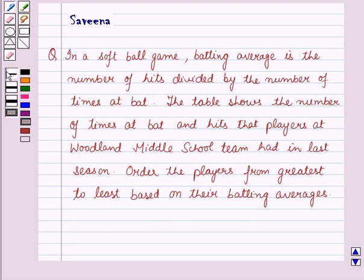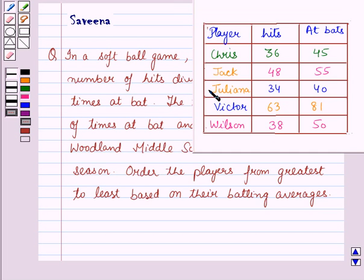Hello and welcome to the session. In this session, we will discuss a question which says that in a software game, batting average is the number of hits divided by the number of times at bat. The table shows the number of times at bat and hits that players at Woodland Middle School team had in last season. Order the players from greatest to least based on their batting averages.